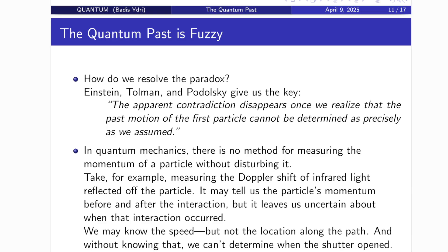In quantum mechanics, there is no way to measure the momentum of a particle without disturbing it. Consider a seemingly clever method, like measuring the Doppler shift of infrared light reflected off a particle. It might tell us the particle's momentum before and after the interaction. But it leaves one crucial piece of information uncertain, when that interaction occurred. You might know the particle's speed, but not its exact location along the path. And without knowing that, you can't say when the shutter opened.